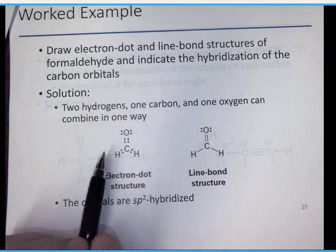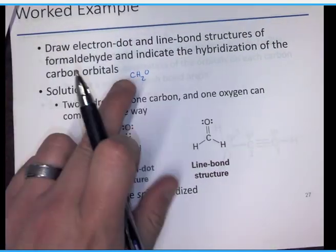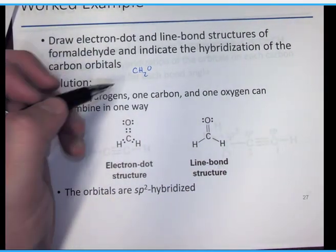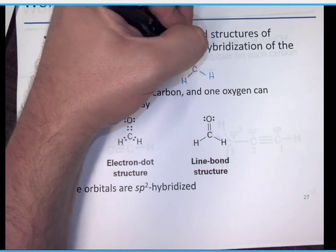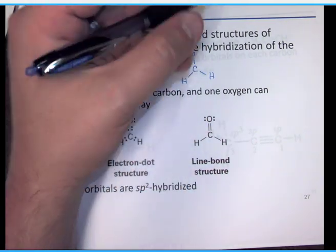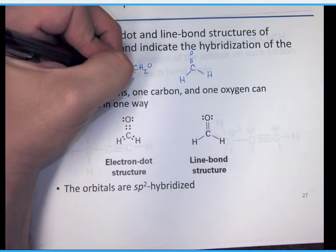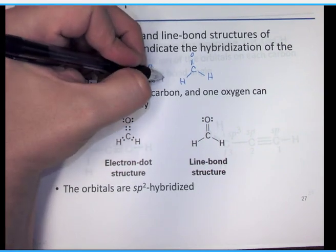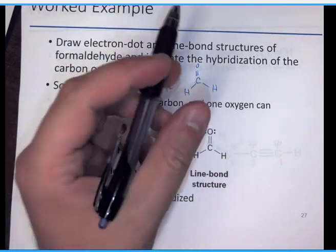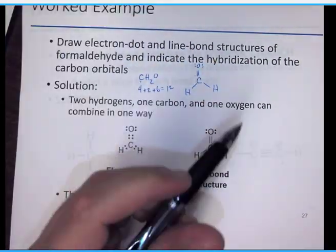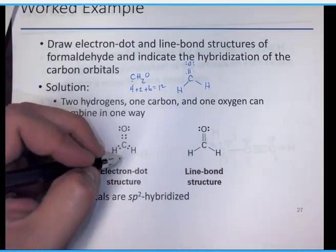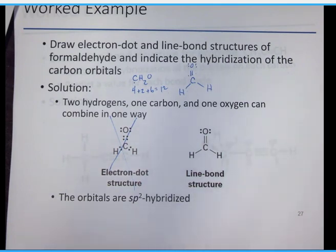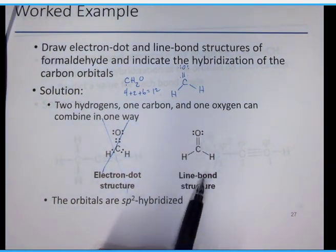Drawing the electron dot structure for formaldehyde, CH2O: carbon is the central atom with two hydrogens and an oxygen. The carbon doesn't have eight electrons, so there must be a pi bond. You have four plus two plus six electrons = twelve total. You should see two lone pairs on the oxygen: two, four, six, eight, ten, twelve — all twelve electrons are shown and the structure is validated. Electron dot structures are cumbersome, so we'll move toward line bond structures.